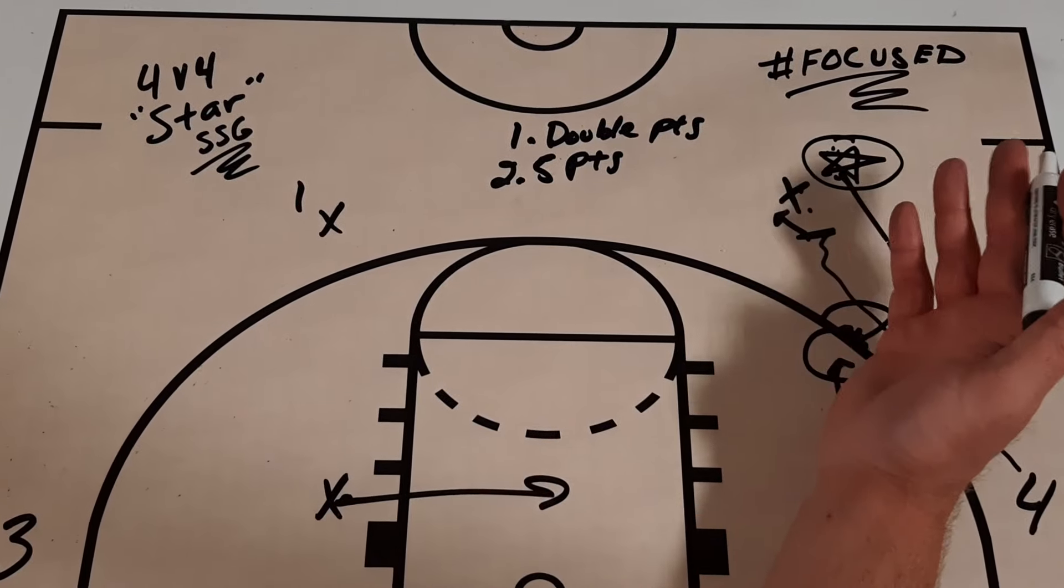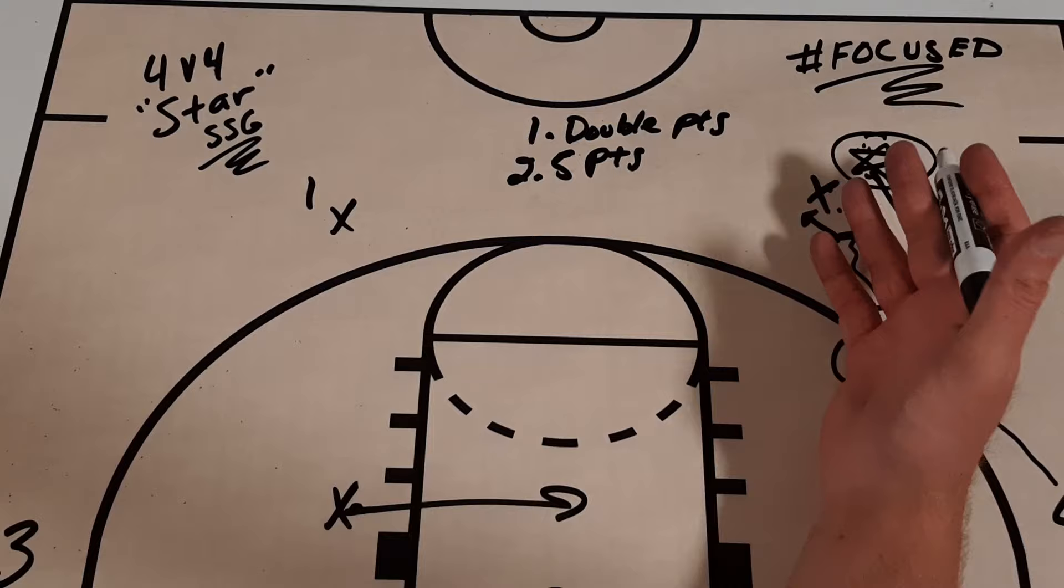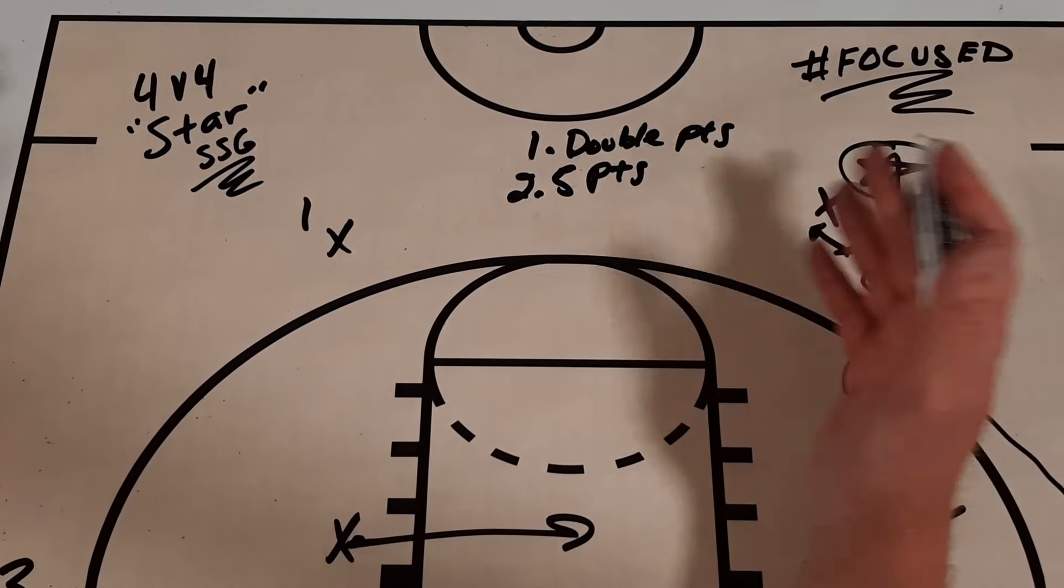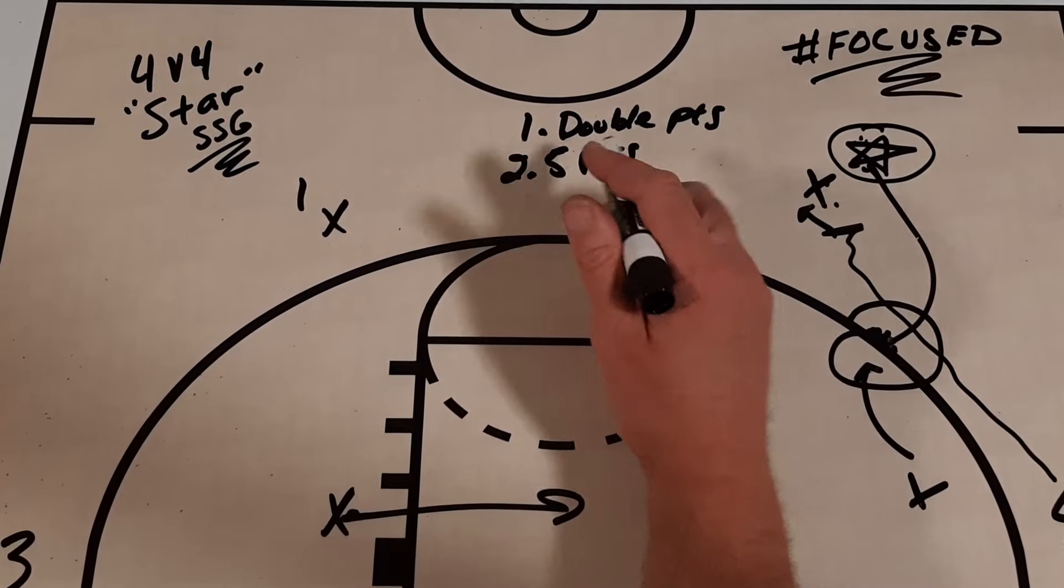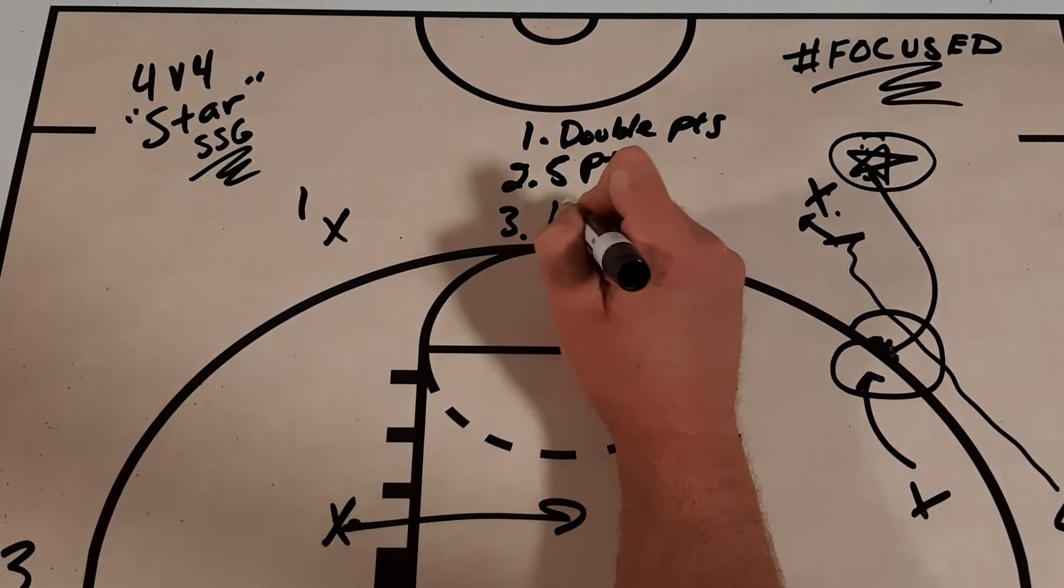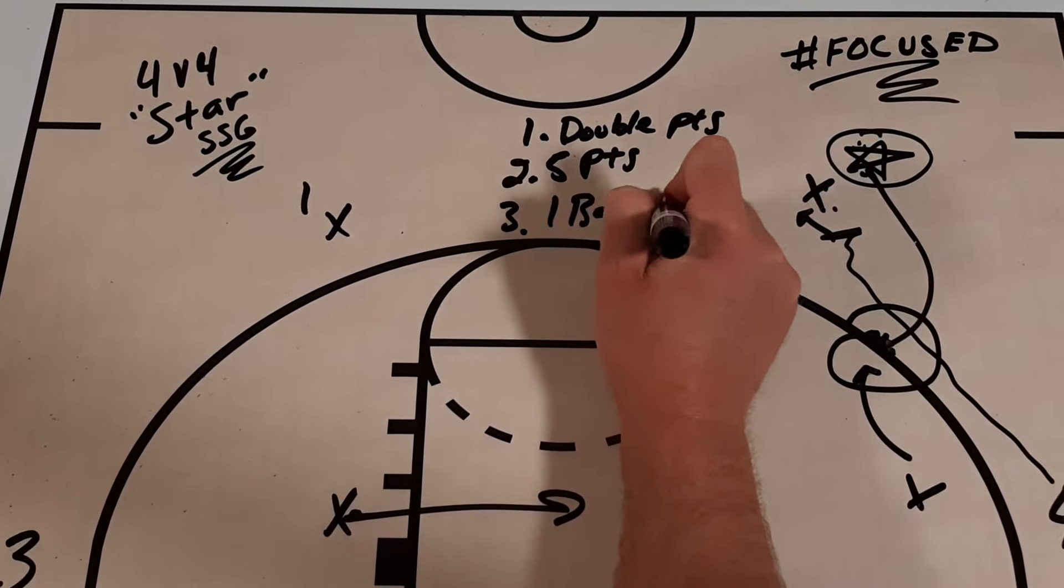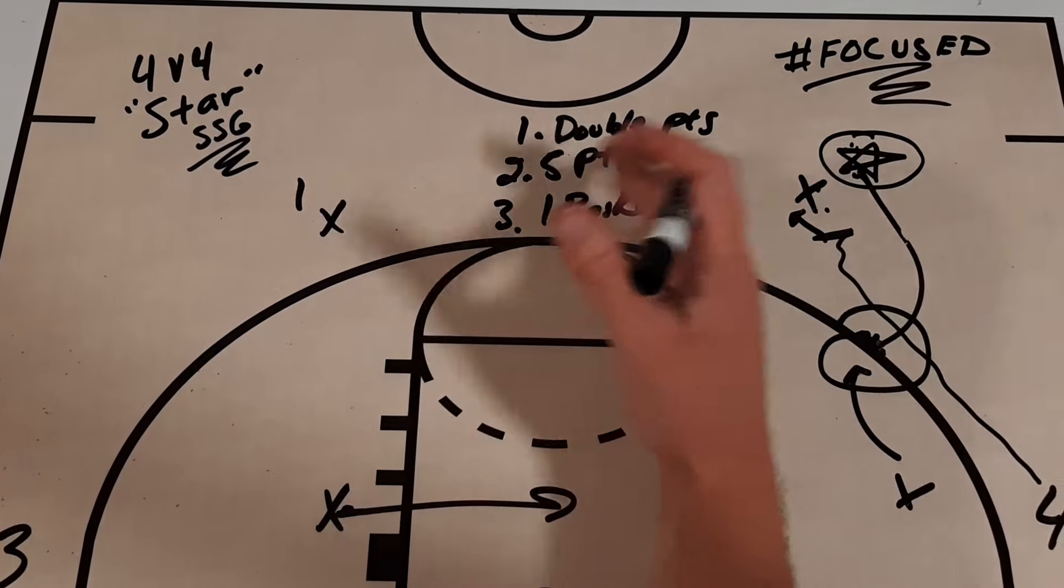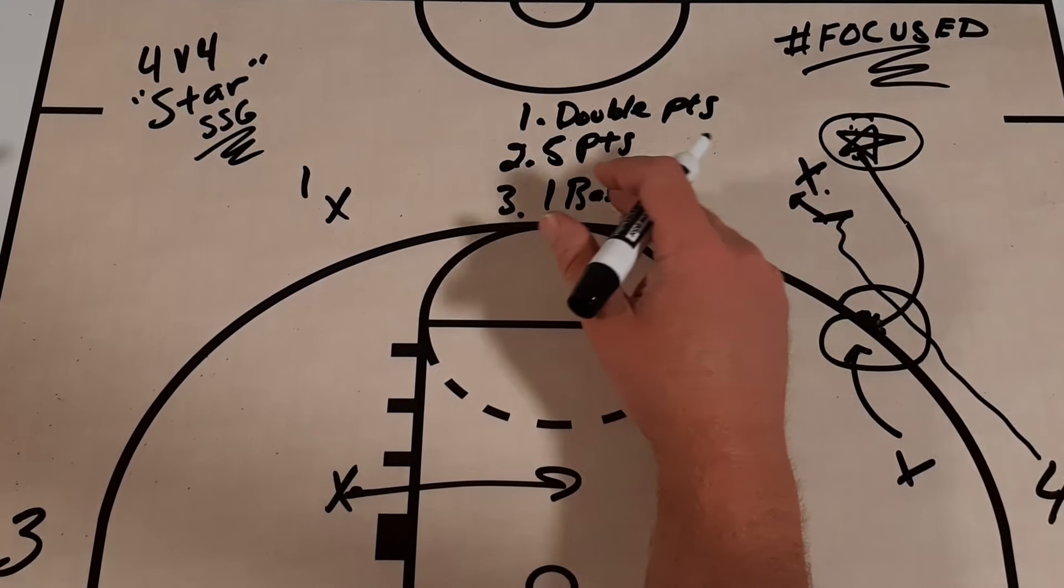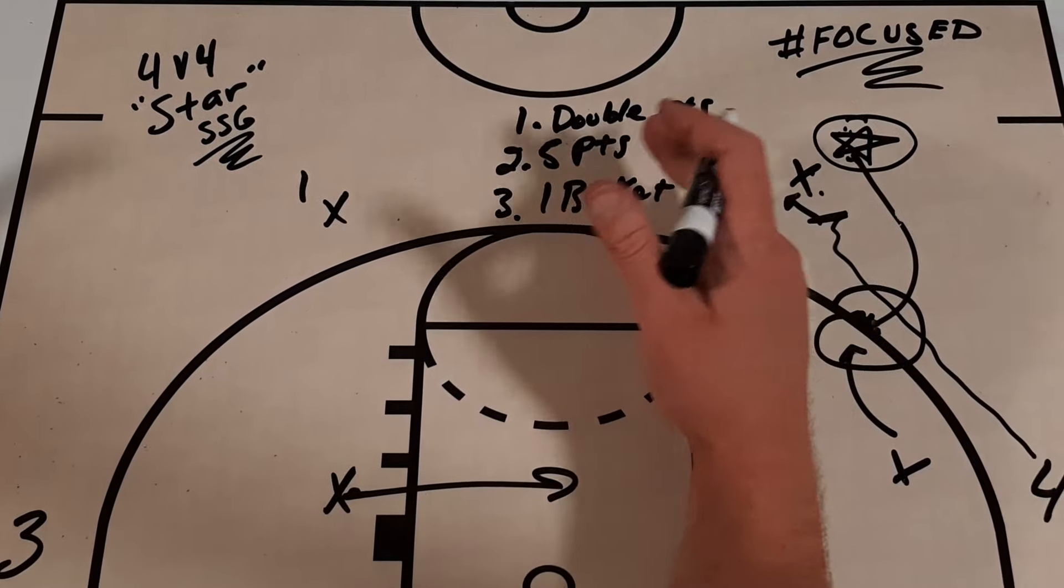Now, if you play a box-in-one against a team that has a star player, you could certainly incorporate this as well. But the double points, the 5 points, you could also do 1 basket, and just say, first basket from that star player, and that team wins the round. You play 5 rounds, and first team that gets to those 5 rounds wins.